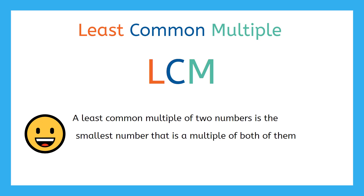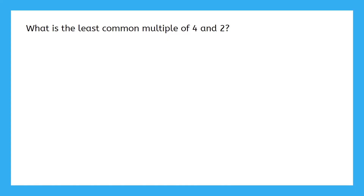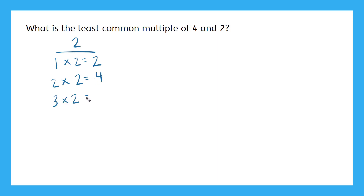That sounds really confusing, but let's take our time and figure it out together using some easy numbers, like four and two. What is the least common multiple of four and two? Well, first we need to know some multiples of four and two. For two: one times two is two, two times two is four, three times two is six, and four times two is eight. For four: one times four is four.